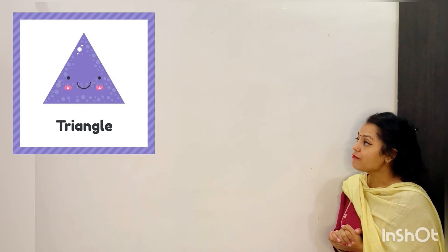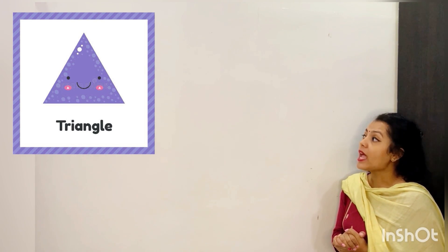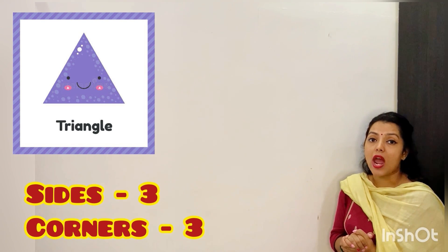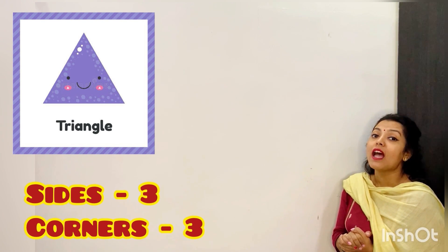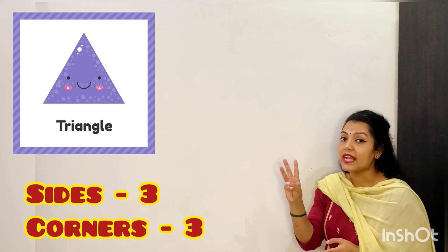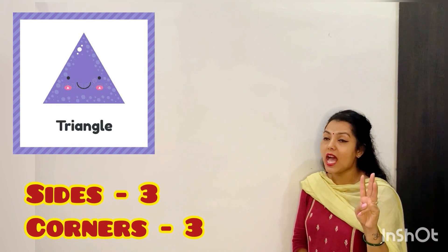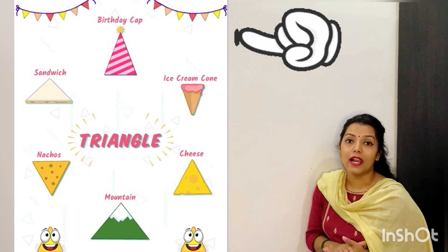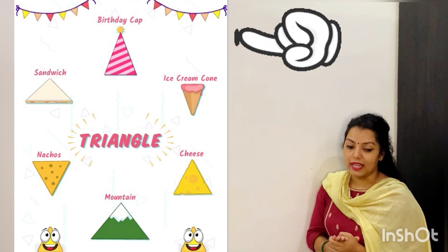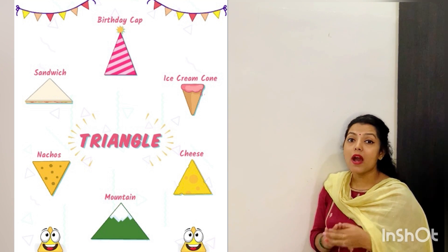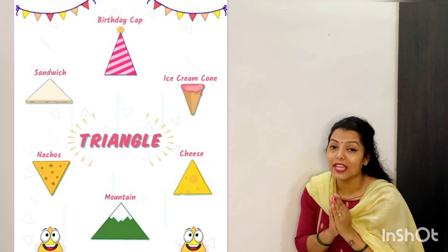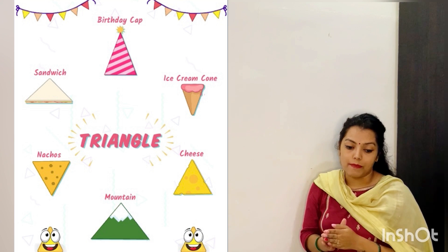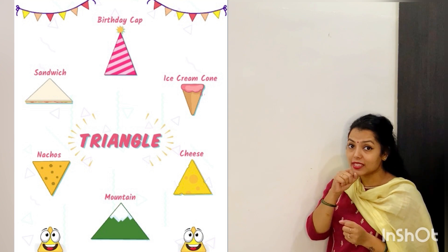Our last shape for today is triangle. As you can see, this triangle is having three sides and three corners. Come let's see some examples of triangle. We have a body cap — the body cap is triangle in shape. Cone — ice cream cone.